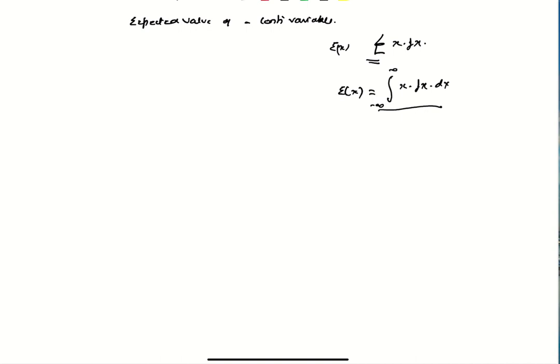For example, take an exponential distribution whose PDF is given by (1/λ)·e^(−x/λ). This is an exponential PDF with parameter λ. Its expected value is the integral from negative infinity to positive infinity of x·(1/λ)·e^(−x/λ)·dx. This is the formula for the expected value.